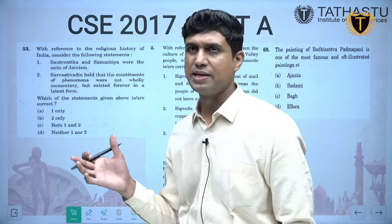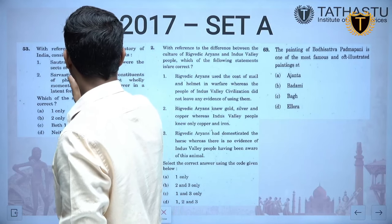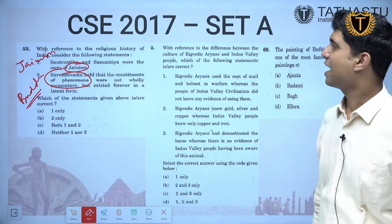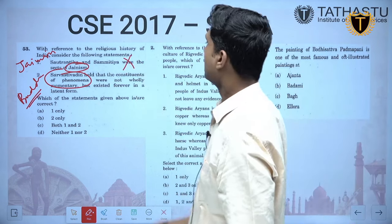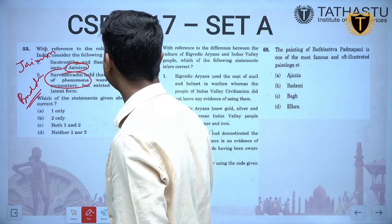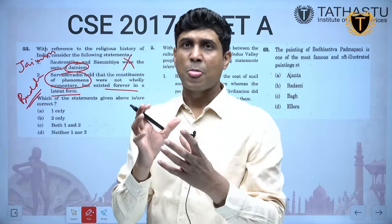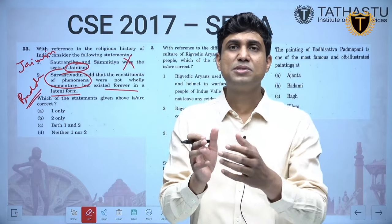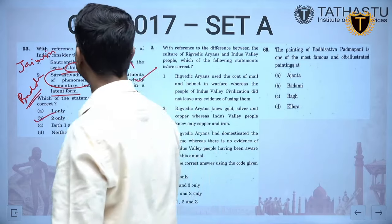Moving to 2017 questions. Again the favourite area — Buddhism and Jainism — is covered in one question. Sthavirakas and Sammatiyas were sects of Buddhism, not Jainism — so that statement is wrong. Sarvastivadin held that constituents of phenomena existed forever in a latent form, which is correct and unique because Buddhism generally believes in the transience of the world. So the answer is 2 only.